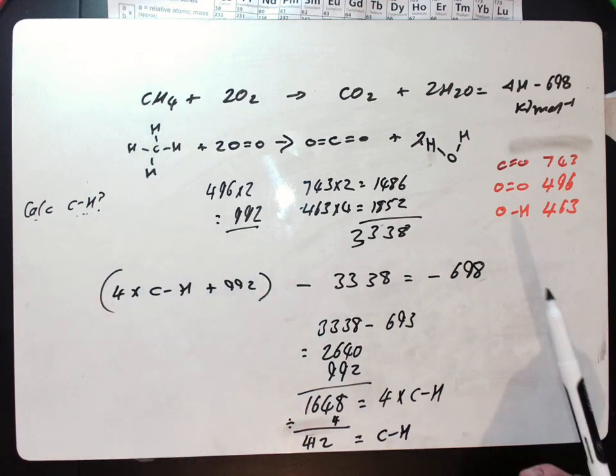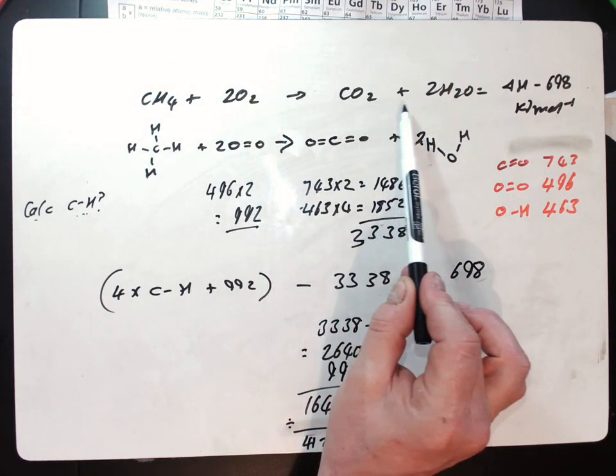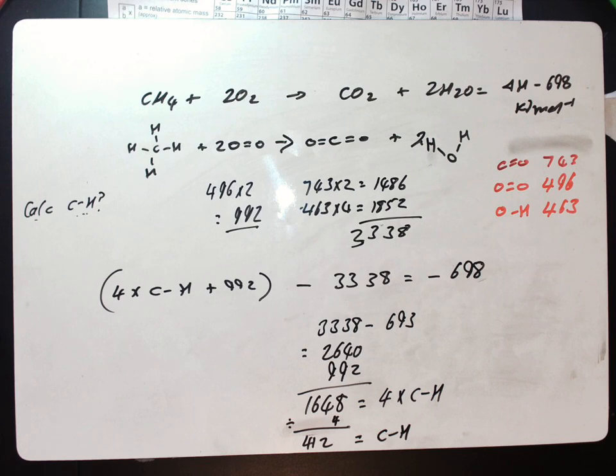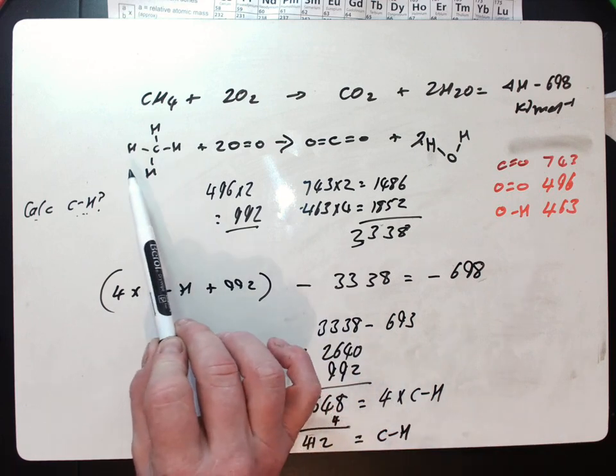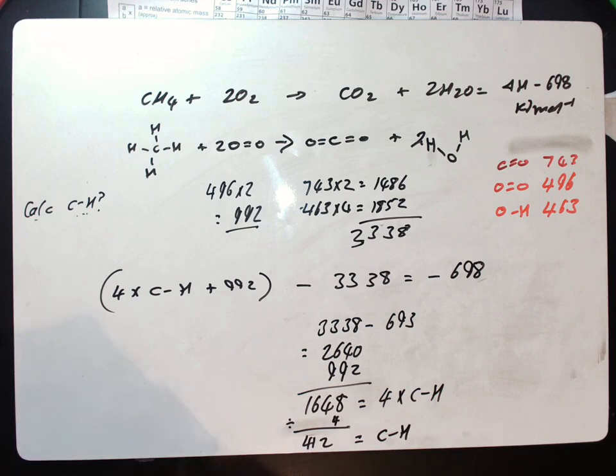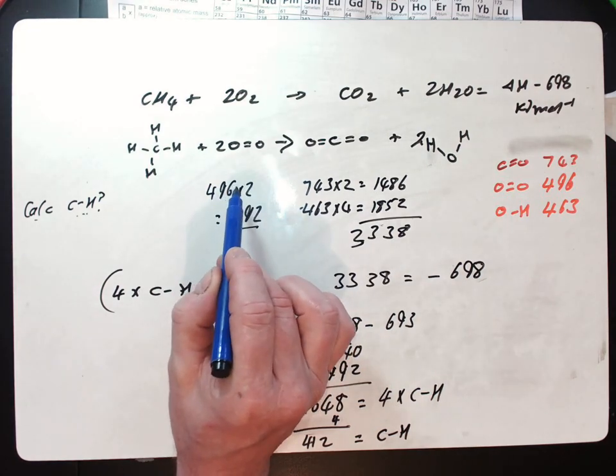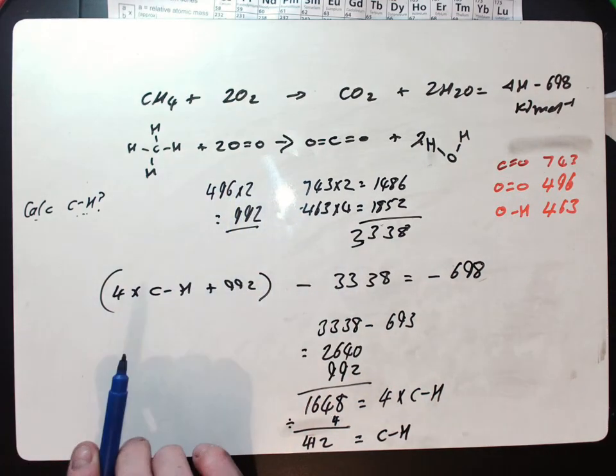We've been given the bond enthalpy of the relative bonds in the oxygen, carbon dioxide and water. Again, the first thing we do is write out or draw out all the bonds. This is why you need to be good at your bonding diagrams in your module one stuff and your organic chemistry if they come up. You need to know whether things are double bonded, single bonded, and what the structure is within them.